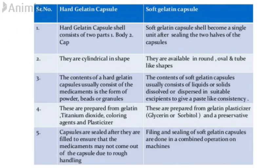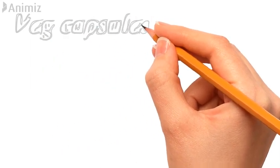Here is a comparative difference between hard and soft gelatin capsules. Hard gelatin capsules are divided into a body and cap, whereas soft gelatin capsules are a single unit formed by sealing of two halves. Hard gelatin capsules are cylindrical in shape, whereas soft gelatin capsules are available in round, oval, tube and other shapes. Hard gelatin capsules contain solid medicaments, whereas soft gelatin capsules contain liquid or semi-solid medicaments. Hard gelatin capsules consist of gelatin, titanium dioxide, colouring agent and plasticizer; soft gelatin capsules consist of gelatin, plasticizer and a preservative. Hard gelatin capsules are sealed after filling, whereas in soft gelatin capsules filling and sealing are done simultaneously.